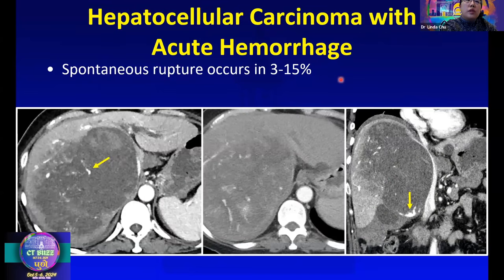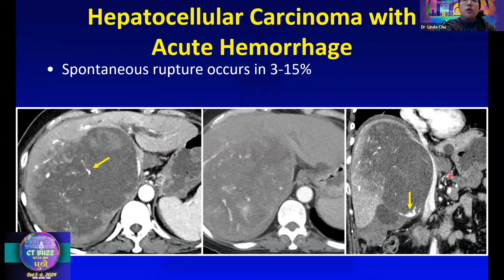HCC can also spontaneously bleed. This is a large mass in the right hepatic lobe, and you can appreciate foci of active contrast extravasation. Spontaneous rupture can occur in up to 15% of cases and carries a very poor prognosis.